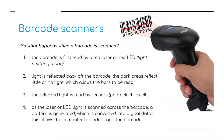What do we use to read a barcode? We use a barcode scanner — a handheld device found in libraries or supermarkets. The barcode is first read by the red laser or red LED light. The light is reflected back off the barcode; dark areas reflect little or no light, which allows the bar to be read. The reflected light is read by sensors — photoelectric cells. As the laser or LED light is scanned across the barcode, a pattern is generated which is converted into digital data, allowing the computer to understand the barcode.